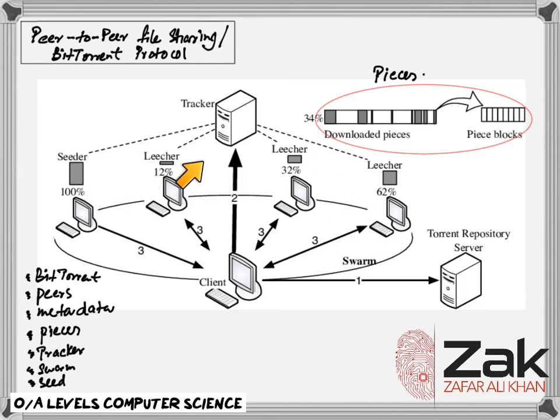Then we have got leech or leechers. It is a peer that has negative impact on the swarm by having a poor share ratio. Share ratio as it has been also shown in this diagram, that is they are downloading much more data than they are uploading. So they have downloaded all complete files but they have only uploaded small amounts. The ratio is determined using the formula: amount of data that has been uploaded divided by amount of data that has been downloaded. So that is the percentage, the ratio.